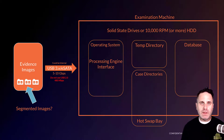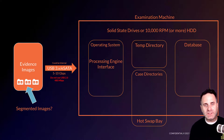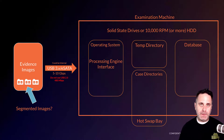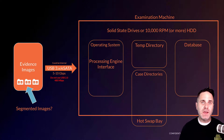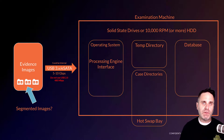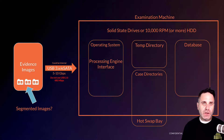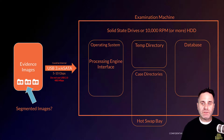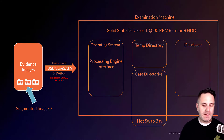I like the case directory on its own disk so that when it fills up, I can pull that disk and store it with my evidence disk. If cases are brought up months or years later, I can restore those cases back into FTK simply by recovering that drive, and I have the evidence images as well. Hot swap bays are your friend here because you can keep your case directories in an internal bay and swap them out very easily.